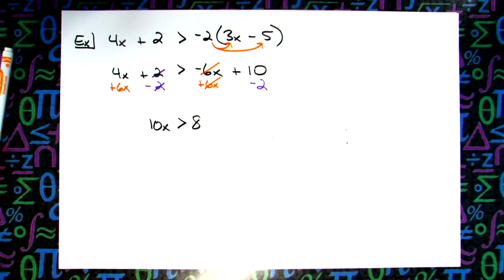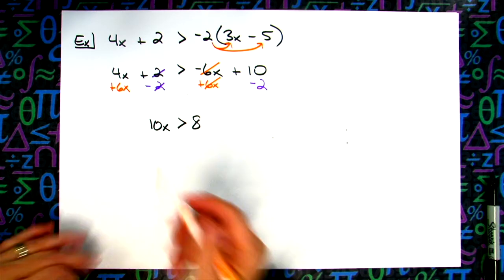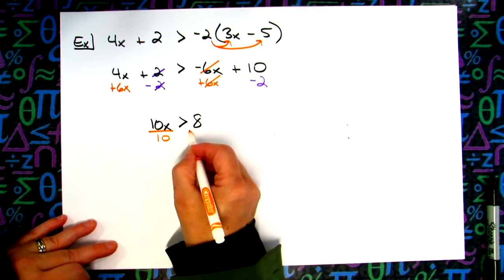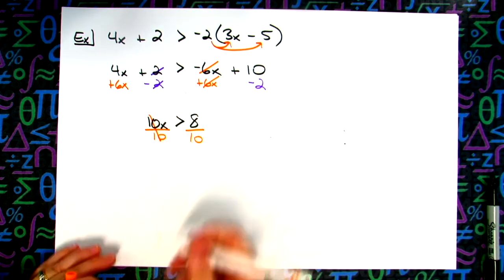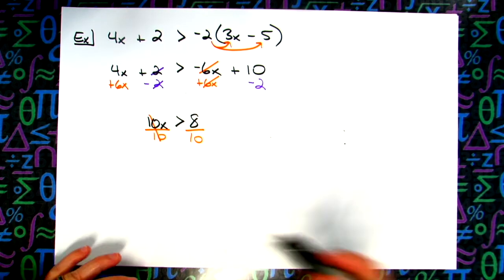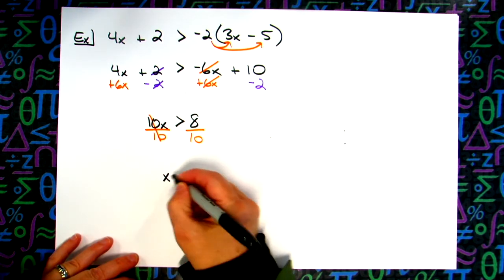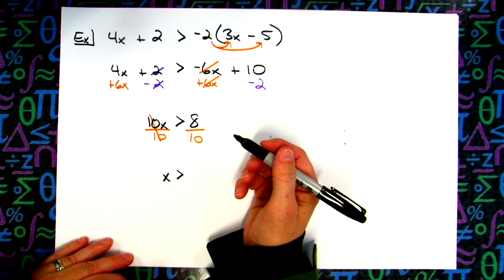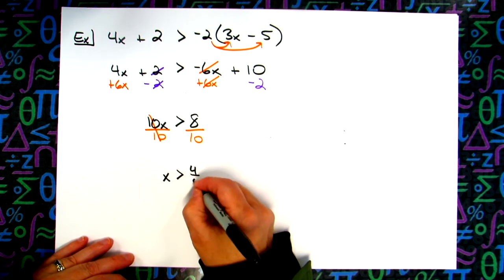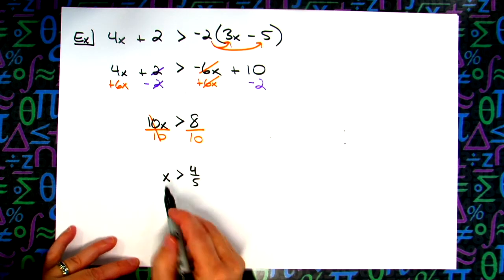Can I divide both sides by 10? Yep. It doesn't divide out evenly. That's okay, we don't care that it doesn't divide out evenly. Do I flip the inequality symbol? Nope, don't flip the inequality symbol. So I just have x is greater than. Can I reduce 8 over 10 to lowest terms? Yeah, so like 4 fifths? Okay, so that's an answer.